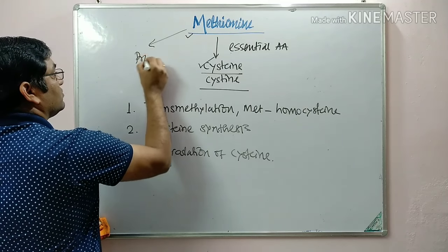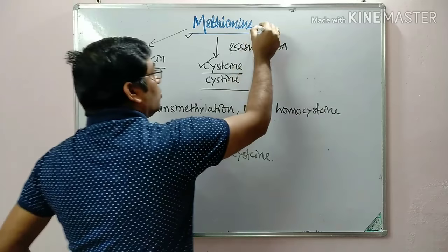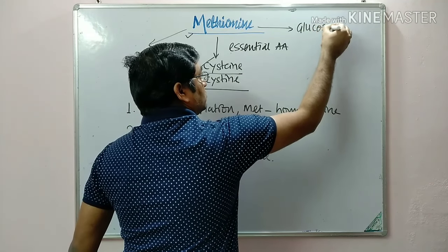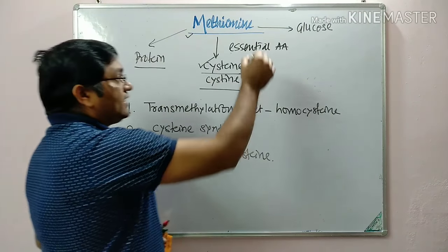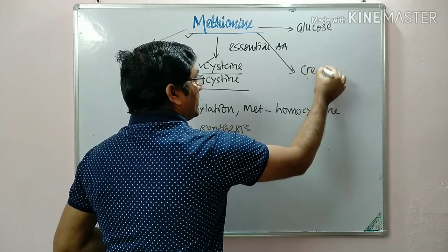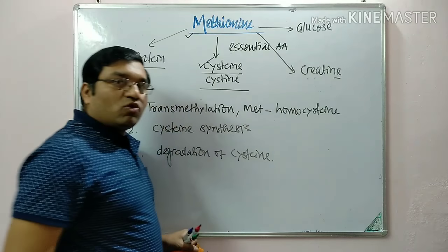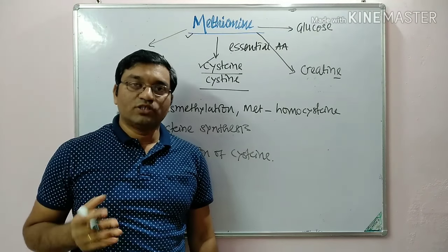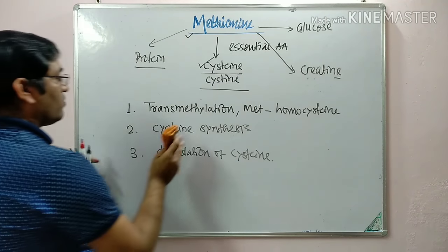Methionine is utilized for protein synthesis. It is also a glucogenic amino acid — it will give glucose. Glycine, arginine, and methionine are utilized for the synthesis of creatine. Methionine is also important in various transmethylation reactions and gives different biological products. Now coming to the methionine metabolism proper.